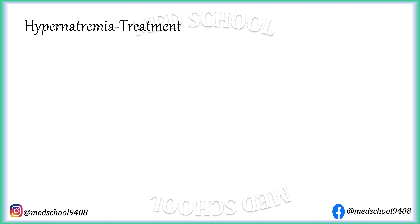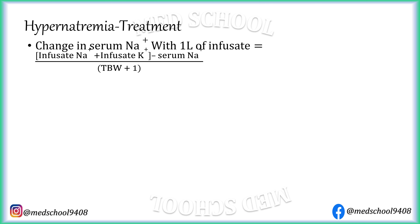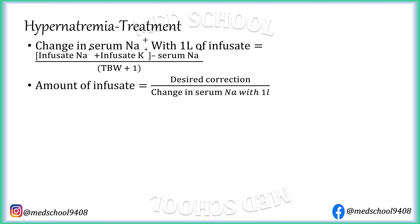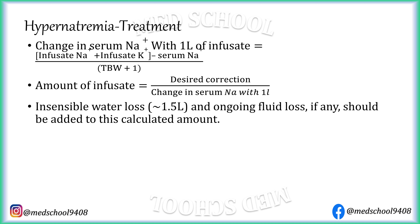To ensure correction is achieved at an adequate rate and the maximum daily correction limit is not crossed, we need to do some calculations. This formula gives the value of how much sodium correction is achieved with 1 litre of infusate. The total amount of infusate to achieve the desired correction can be calculated by dividing the desired correction by the correction achieved with 1 litre. Insensible fluid loss of approximately 1.5 litres, plus any ongoing fluid loss, should be added to this calculated amount.